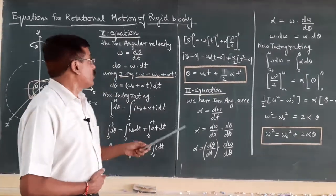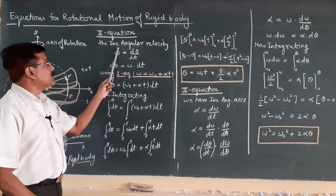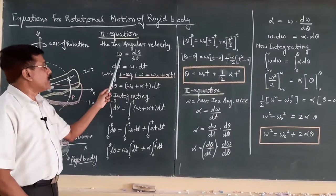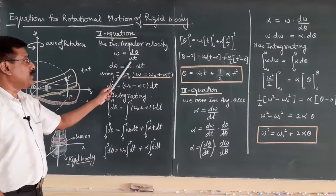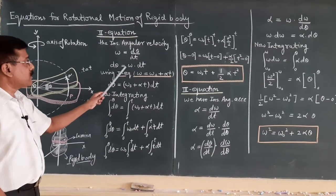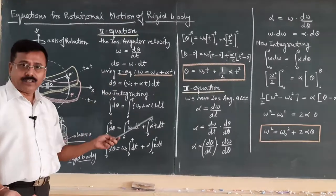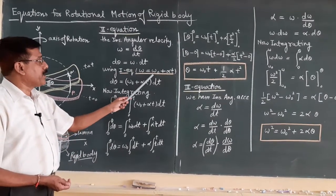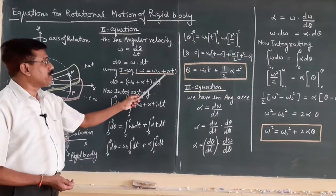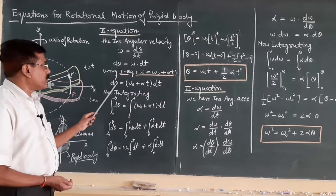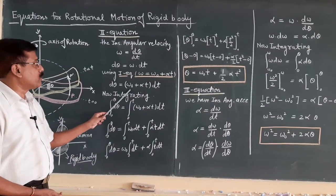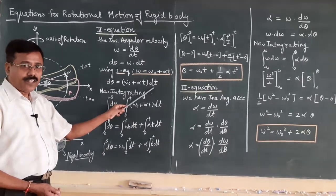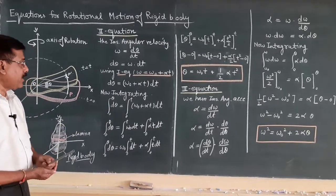For the second equation of motion, we take the instantaneous angular velocity: omega equals d-theta by dt, so d-theta equals omega dt. Using the first equation of motion — omega equals omega-zero plus alpha t — we can write d-theta equals (omega-zero plus alpha t) dt. Now we will integrate.